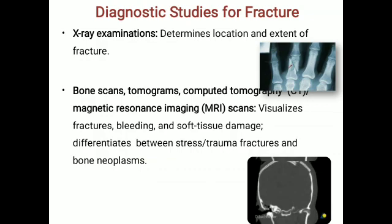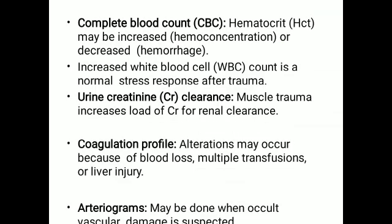Diagnostic studies for fracture: first, a thorough case history is taken for the patient, then clinical examination, then X-ray examination. X-ray examination determines the location and extent of the fracture. In maxillomandibular fractures, the X-rays mostly used are OPG, CT scan with 3D reconstruction, and for soft tissue injuries, MRI. Lab investigations include complete blood count and other investigations.